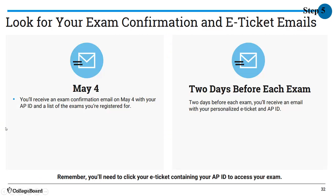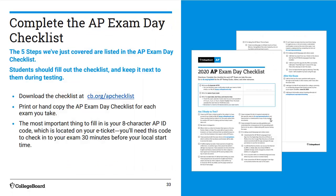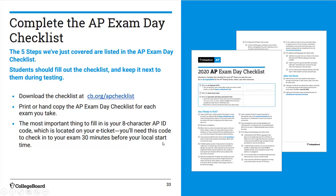You should have already gotten an exam confirmation email with your AP ID and the different exams listed. Two days before each exam you'll get your e-ticket — a different one for each exam. This is the AP exam day checklist — a two-page document. You can print it from cb.org/ap-checklist or from my website. Fill it out and have it with you — it'll prompt you for your code and guide you through everything.